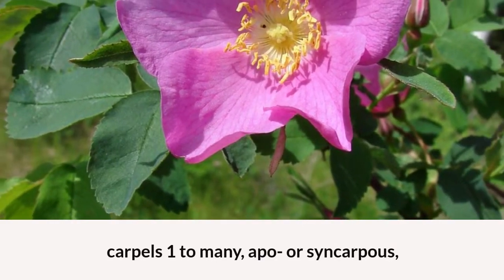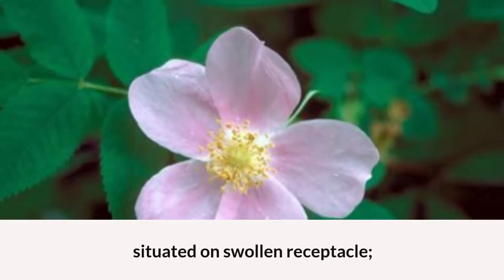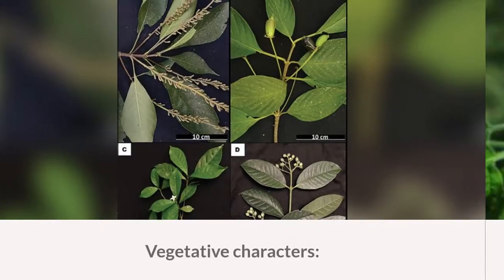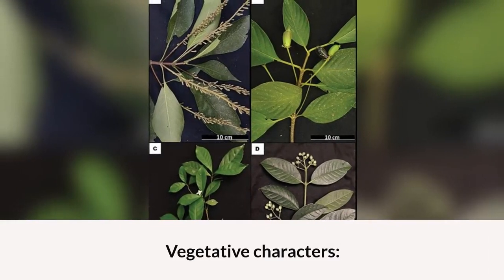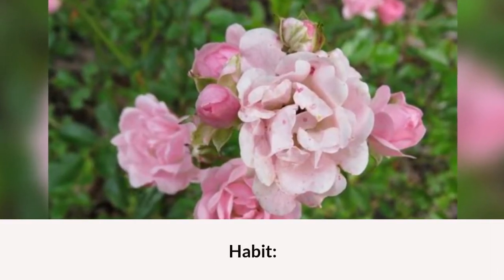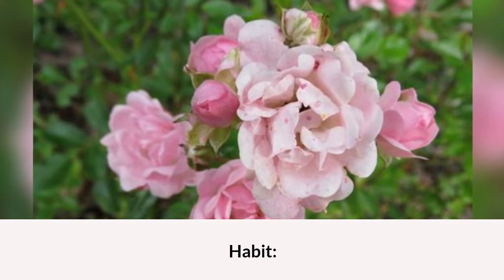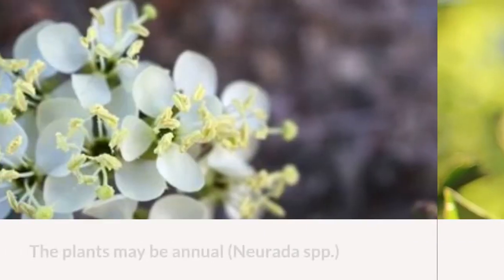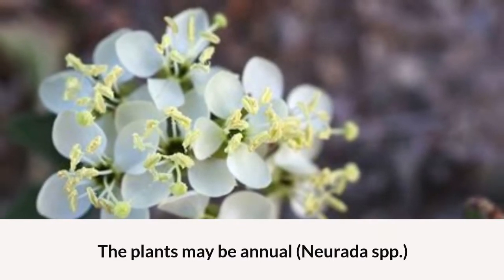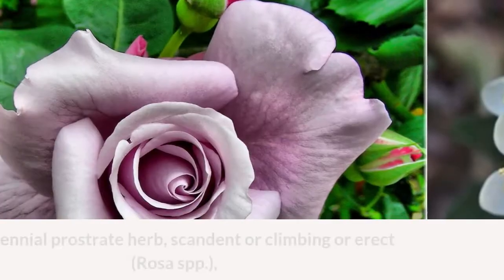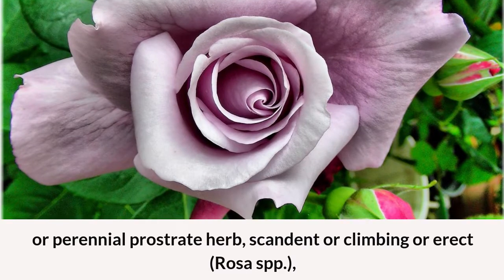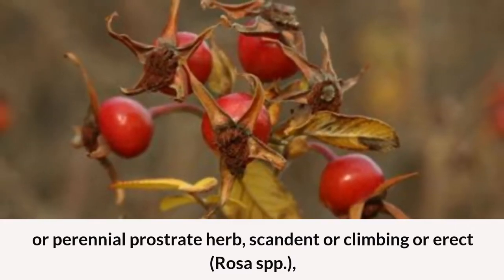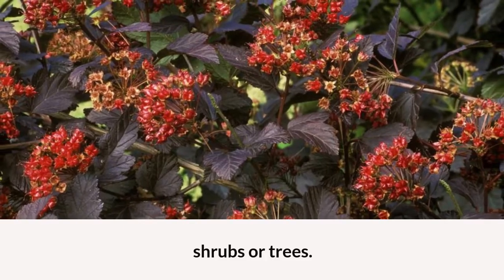Carpels one to many, apocarpous or syncarpous, situated on a swollen receptacle. Fruit a collection of achenes, drupe, or pome. Vegetative characters: the plants show great variation in habit. Plants may be annual (Neurada spp.) or perennial, prostrate herbs, scandent or climbing, or erect (Rosa spp.), shrubs or trees.